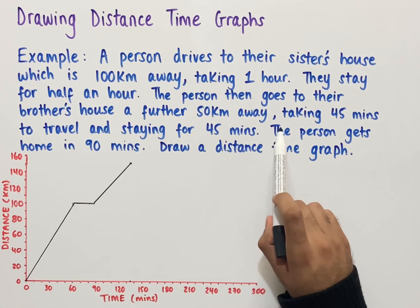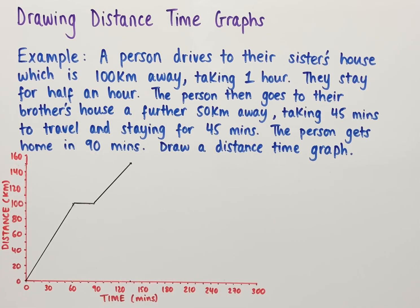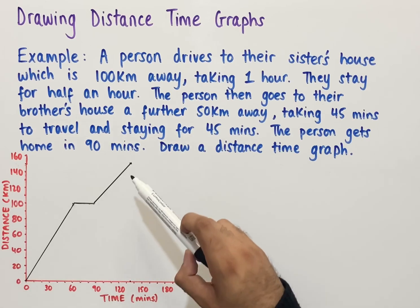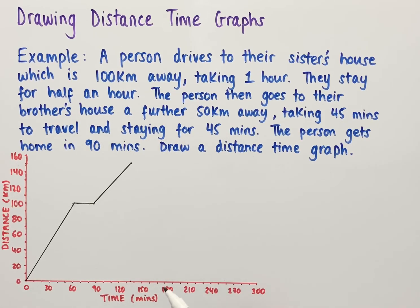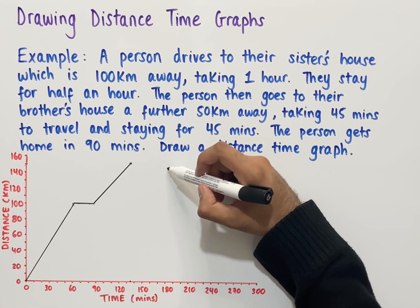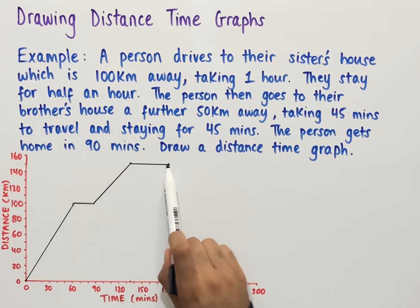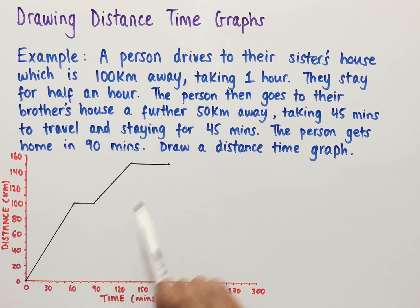The person stays at their brother's house for 45 minutes. Starting from 135 minutes, we add 45 minutes to get 180 minutes. Since the person is staying, their distance is neither increasing nor decreasing. So we plot a point at (180, 150) and connect the two points to complete this section of the graph.